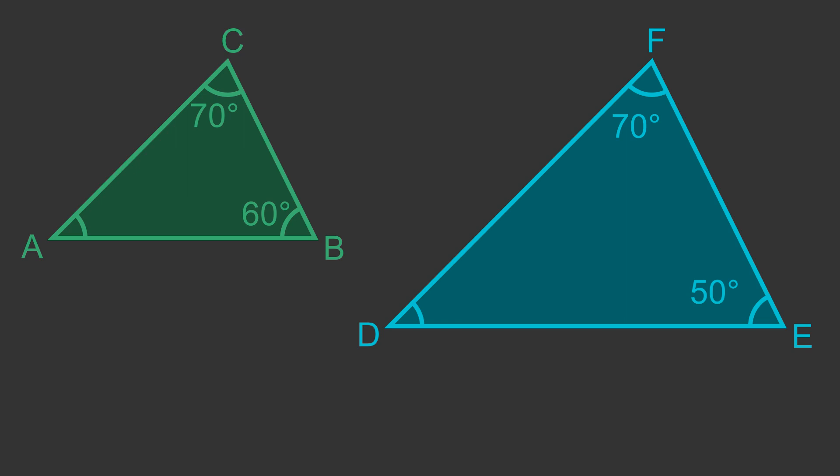For triangle ABC, the two known angles are 70 degrees and 60 degrees. Of course the angles in a triangle add up to 180 degrees. B and C add up to 130, so we know that angle A must be 50 degrees. This means that angle A equals angle E. And we already know that angle C equals angle F. So the triangles are similar by the AA rule.